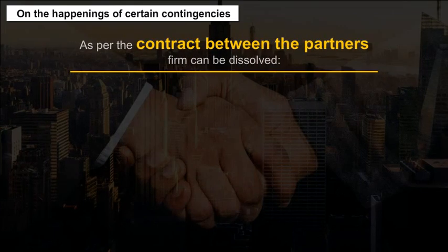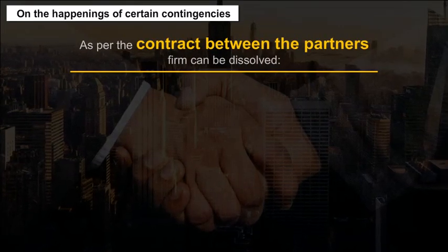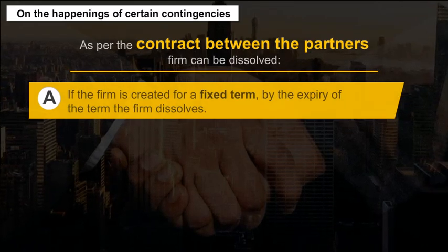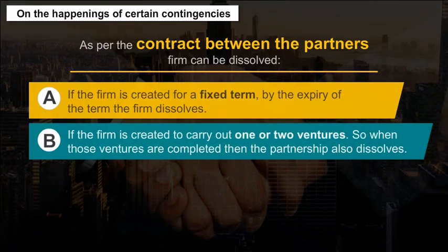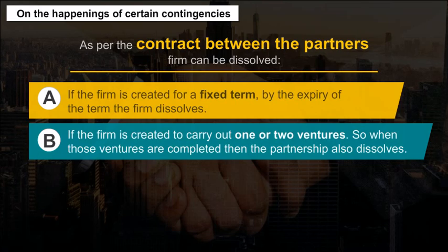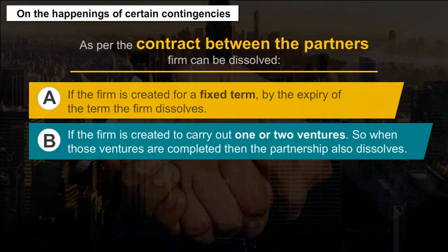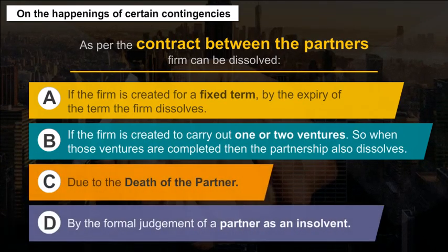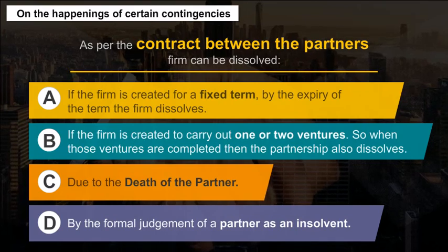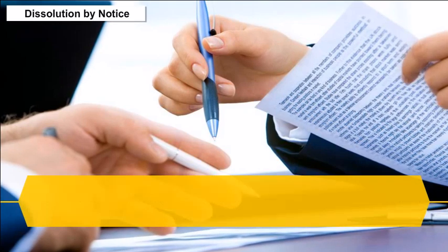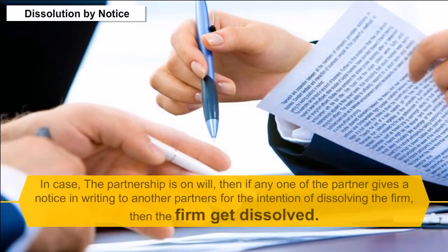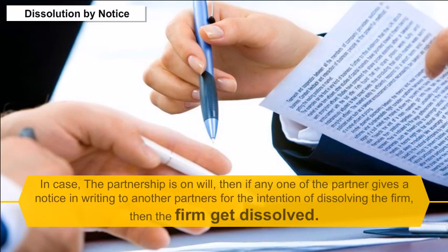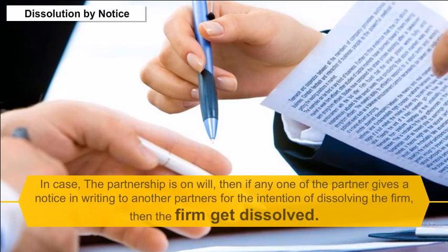Other circumstances of dissolution include: A. If the firm is created for a fixed term, by the expiry of that term the firm dissolves. B. If the firm is created to carry out one or more ventures, when those ventures are completed the partnership also dissolves. C. Due to the death of a partner. D. By the formal judgment of a partner as insolvent. In case the partnership is at will, if any one partner gives a notice in writing to the other partners of the intention to dissolve the firm, then the firm gets dissolved.